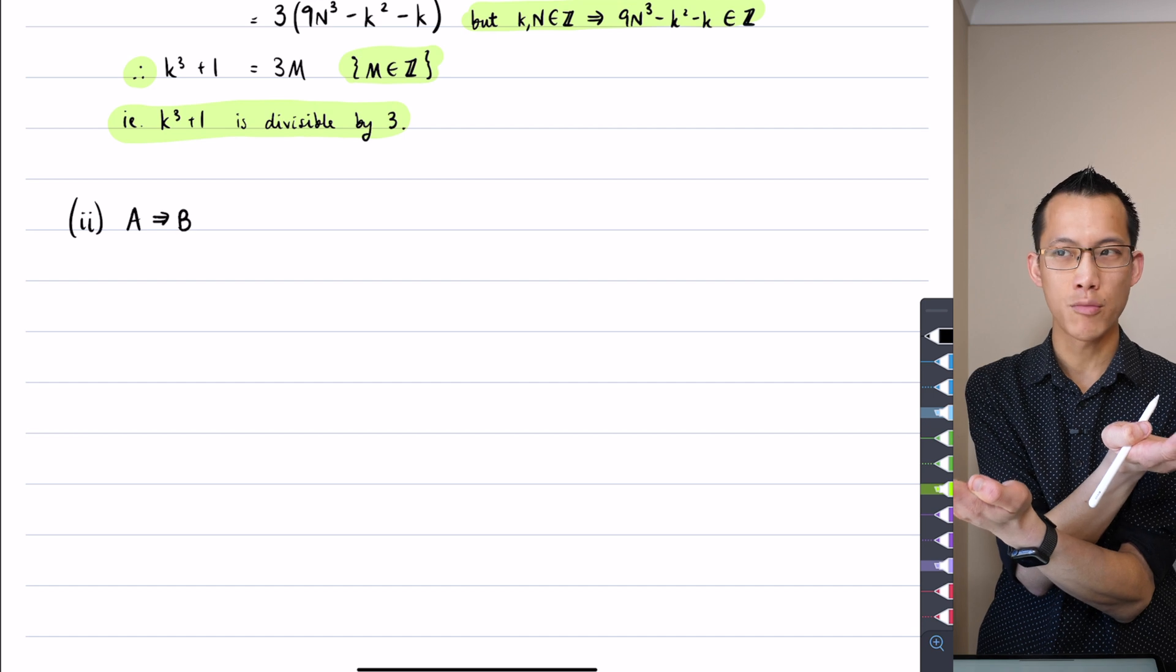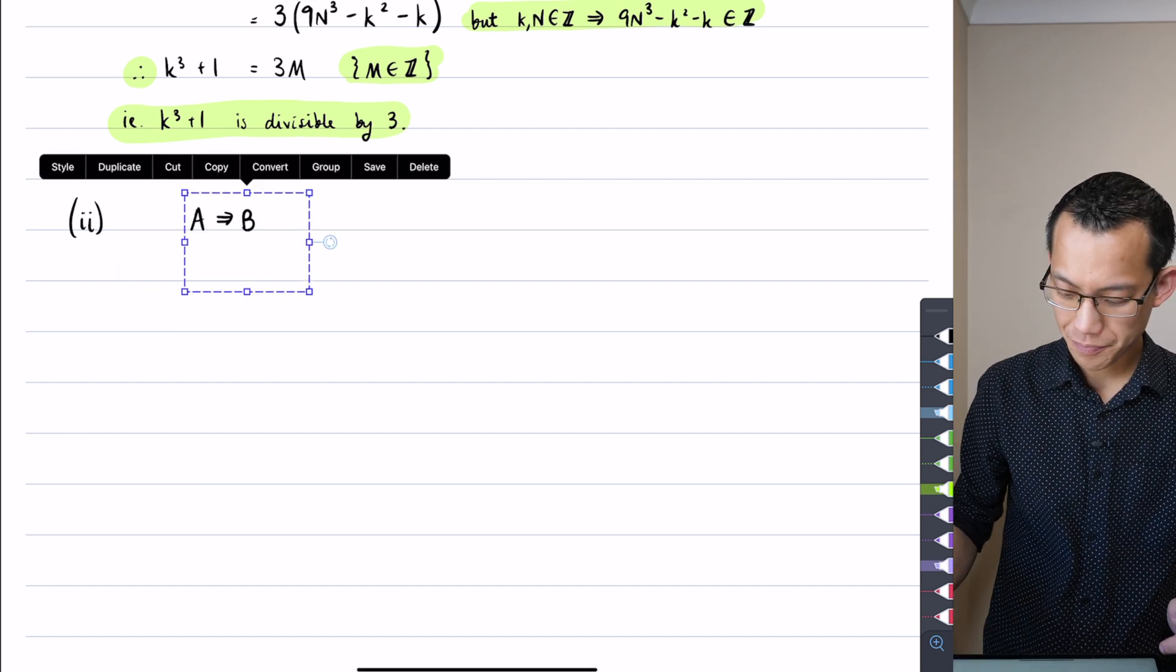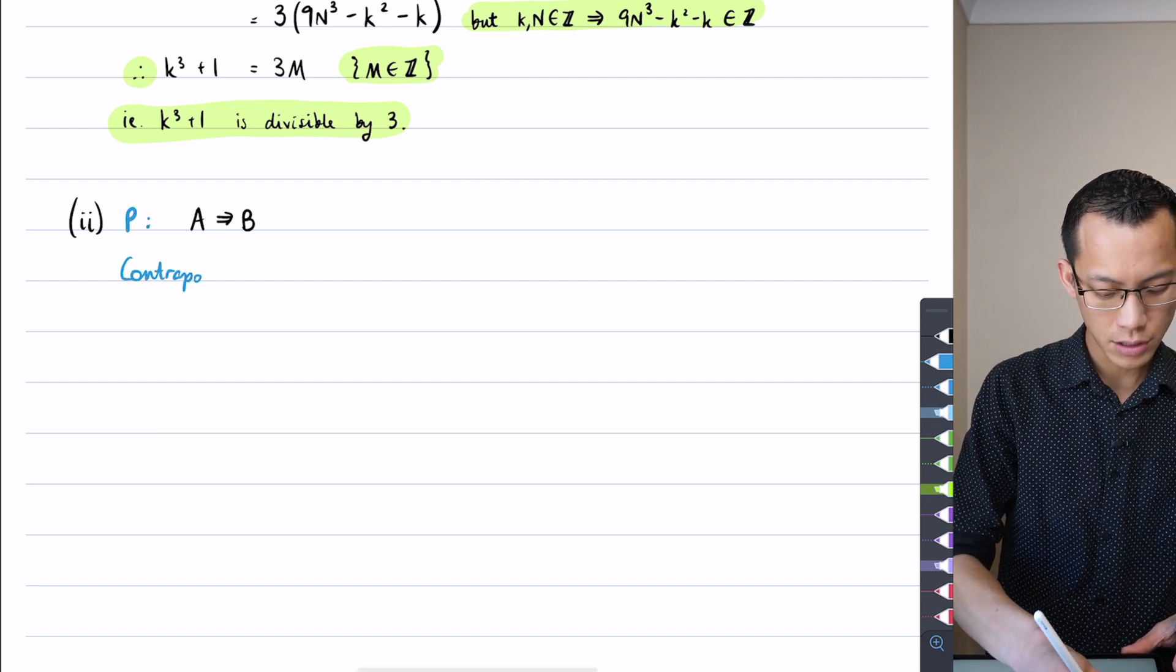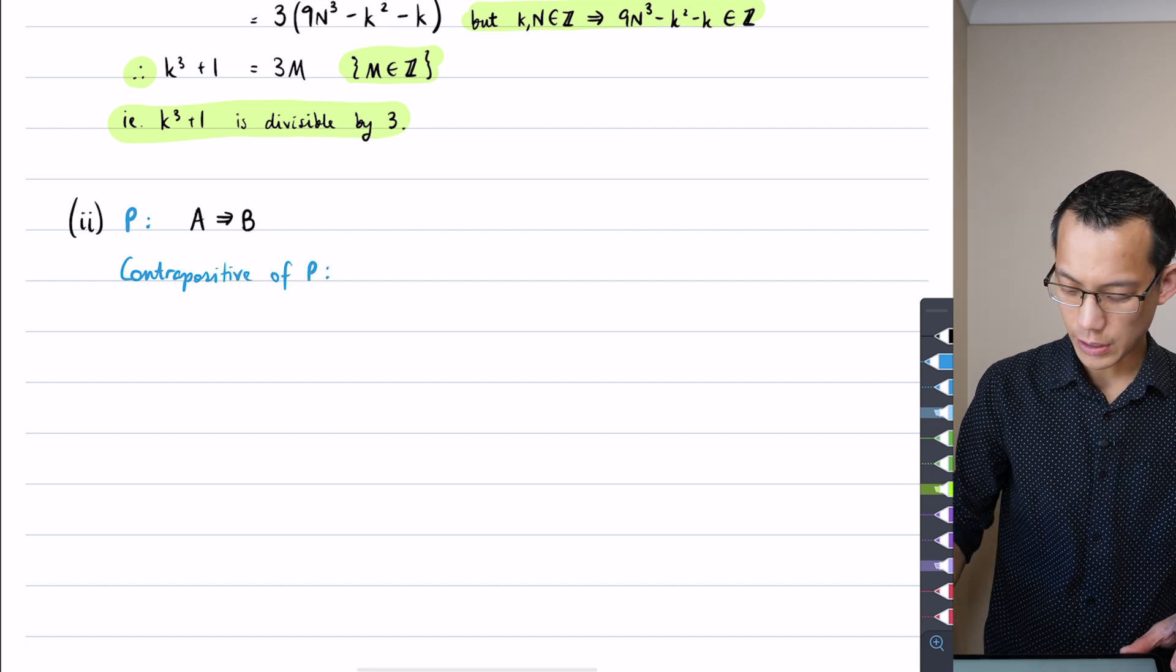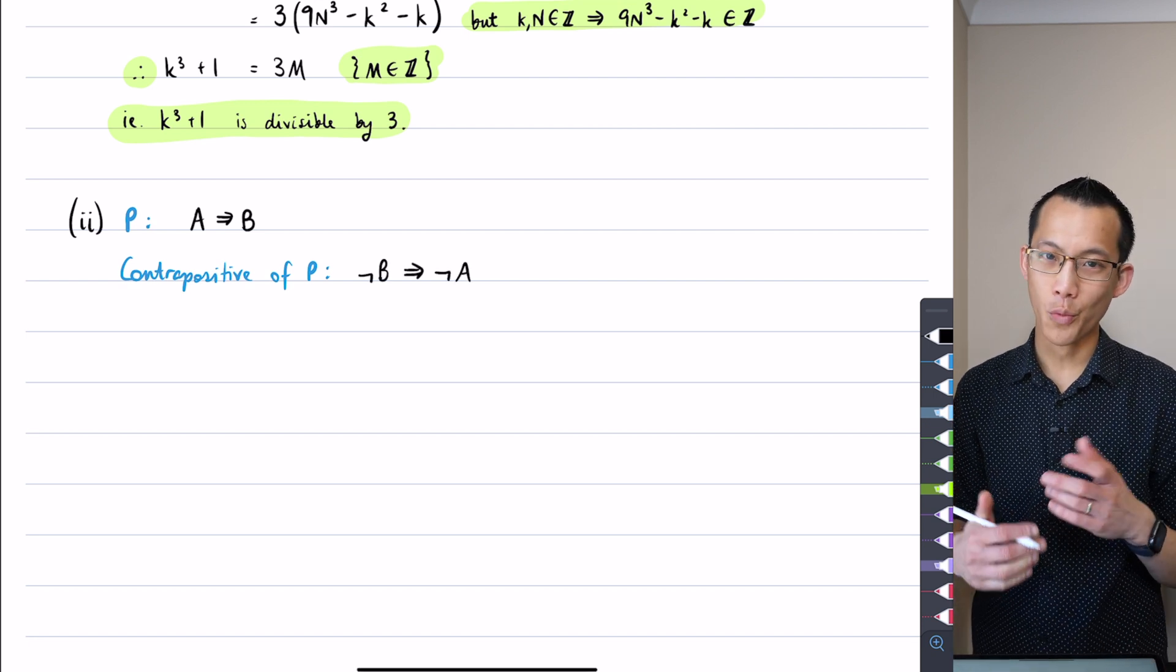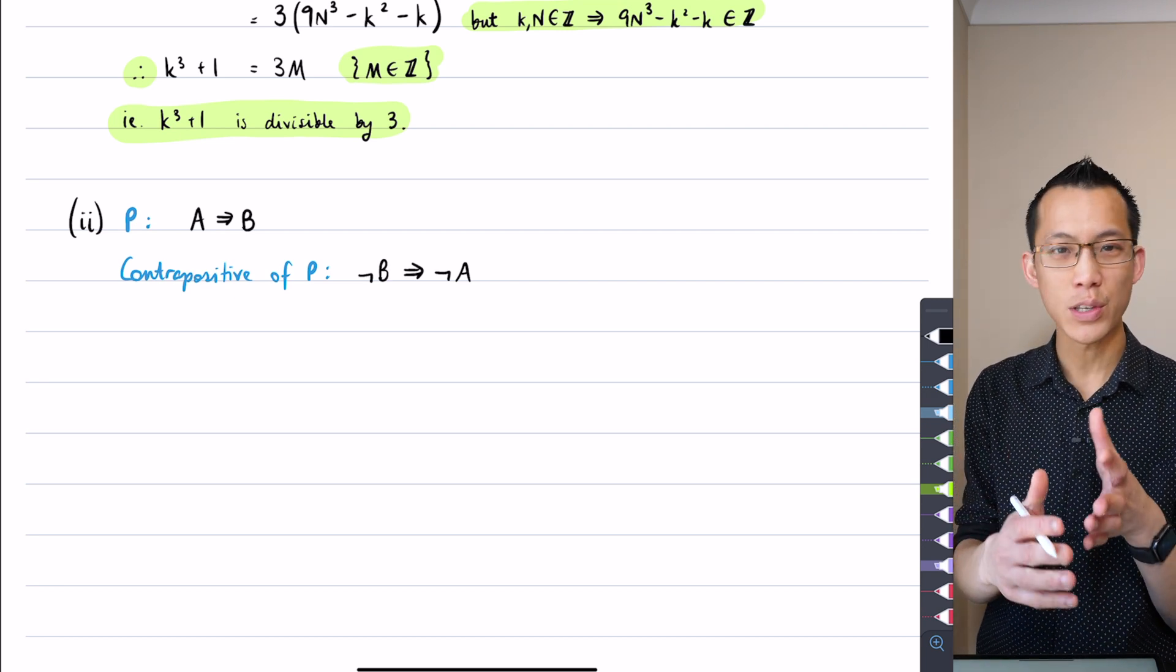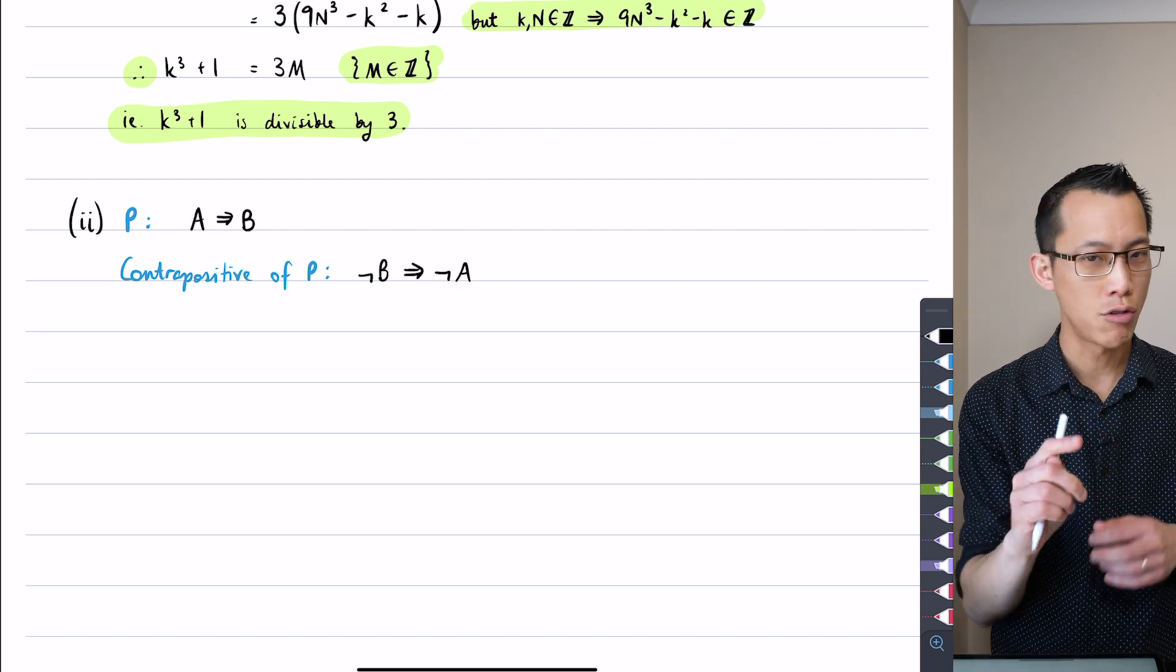If this is P, then the contrapositive of P is going to be not B implies not A. Once you know what A and B clearly are, then doing this in words is all you need to get the one mark for this question.